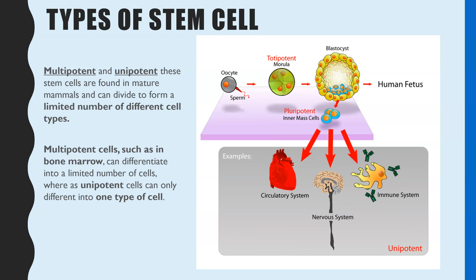Moving on to multipotent and unipotent stem cells. Multipotent stem cells have the ability to differentiate into a limited number of different cells. You'd find these in the bone marrow, for example — the adult stem cells found in bone marrow are multipotent because they're able to differentiate into the different blood cells. Unipotent stem cells — with uni meaning one — can only differentiate into the same type of cell. So skin cells can differentiate to make more skin cells, or muscle cells will make more muscle cells.